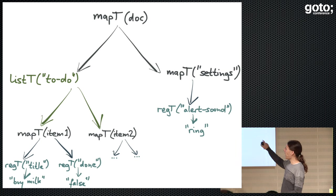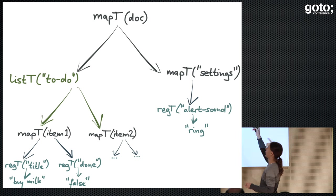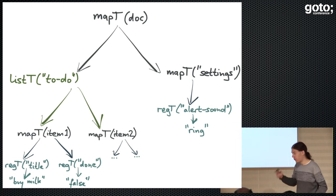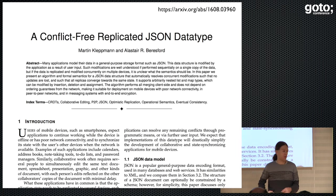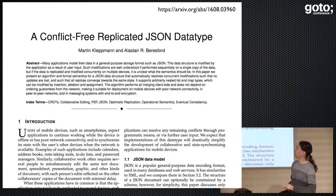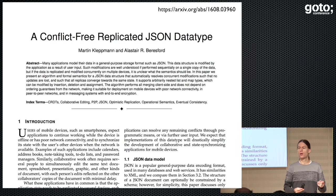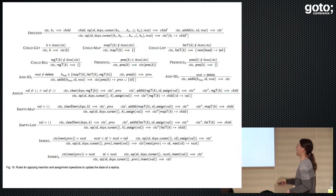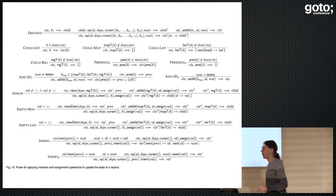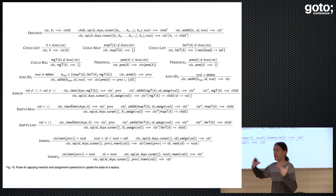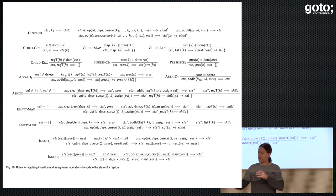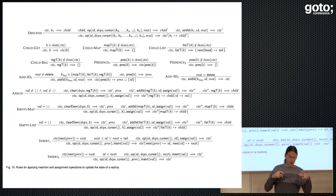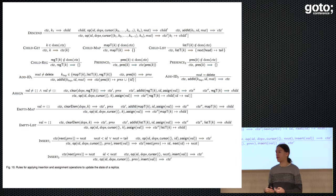We can model this document as a tree with data type annotations — the top-level document is a map, and inside it we have a list under the key 'to-do,' and so on. This is actually an algorithm I developed together with a colleague, and we wrote a paper about it a few months ago — it's called a conflict-free replicated JSON data type. Has anyone here heard of CRDTs before? Cool, so this is an example of a CRDT. This paper is very theoretical, so I'm not going to run through all of the operational semantics today. I'm just going to give the intuition about how the algorithm works and show some of the curious edge cases.